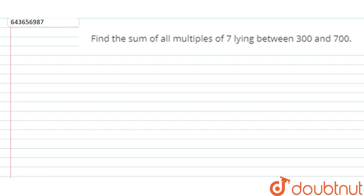In this video we will solve this question: Find the sum of all multiples of 7 lying between 300 to 700. The range of the question is given as 300 to 700.